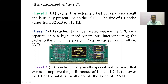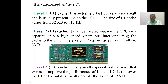Now we move on to the last category, Level 3 or L3 cache memory. It is typically specialized memory that improves the performance of Level 1 and Level 2. It acts as supporting memory for Level 1 and Level 2 to improve their performance.